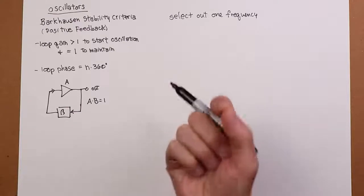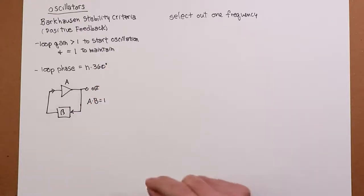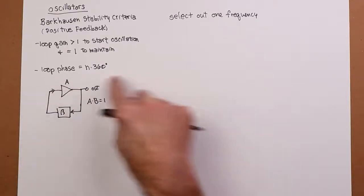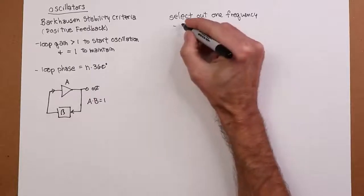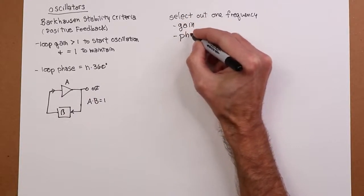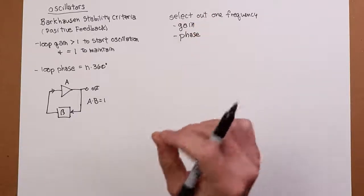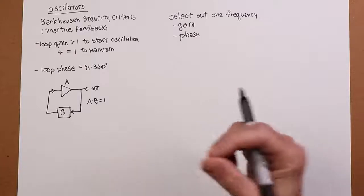Well, there's two ways of thinking about it. You could do it either by gain. In other words, one of them specifically is going to meet this gain requirement the best. Or you can do it via phase. One of them is going to work out to have the proper phase. Both of those must be true, but you design circuits to do this.